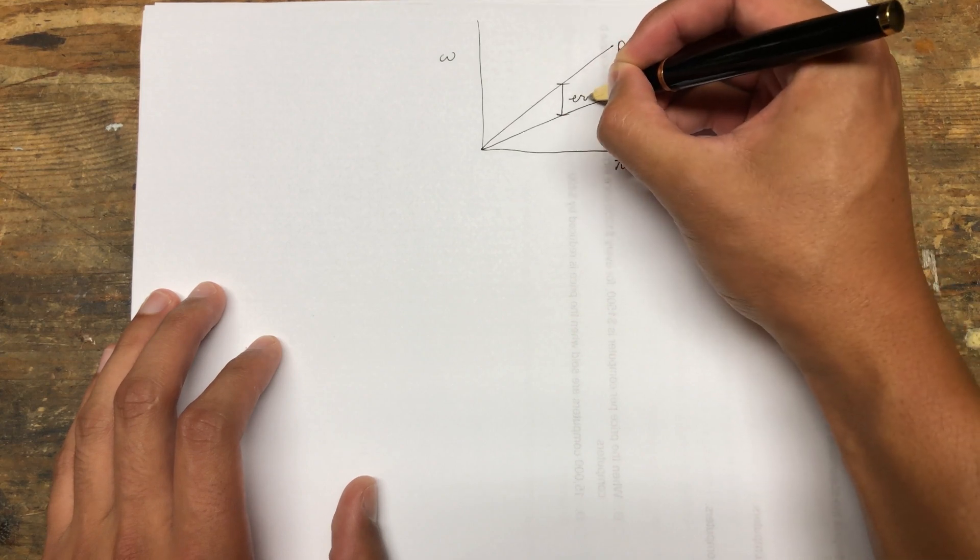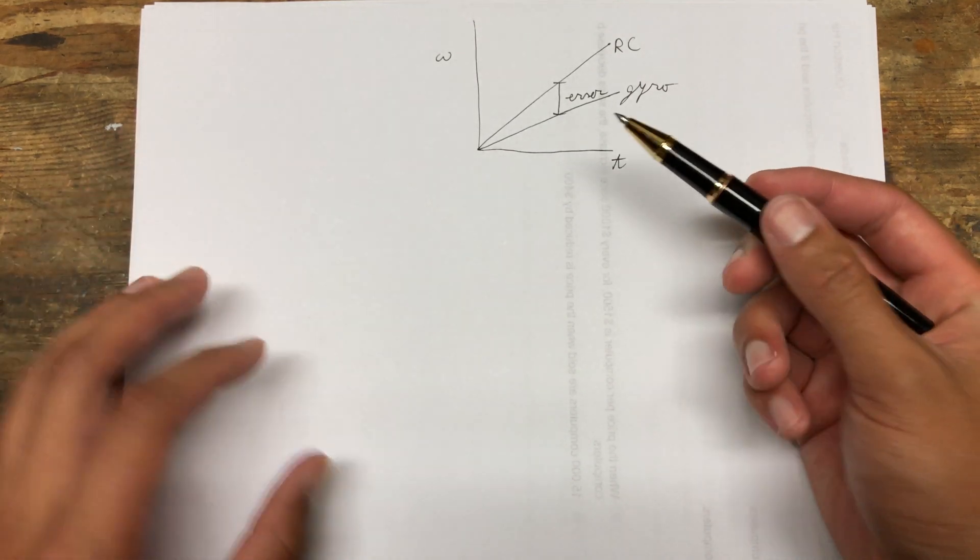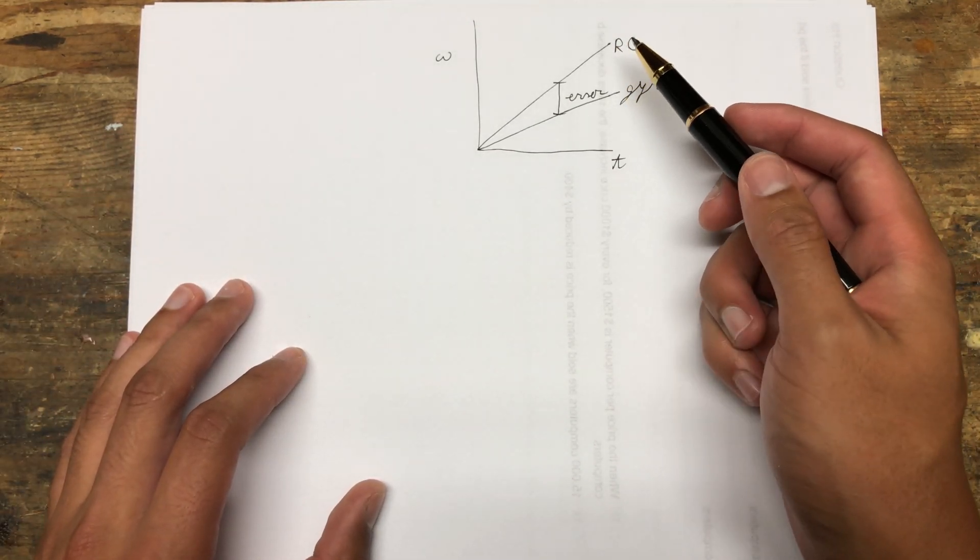The difference between the commanded rate of rotation and the actual rate of rotation is our error. We're trying to get rid of the error with our PID controller so that the quad matches what we are commanding it to do with the RC signal.